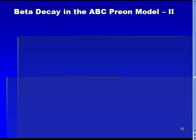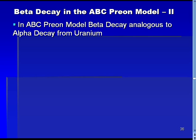There are some important points to make regarding the process of beta decay that we just saw. First, it is important to note that in the ABC preon model, beta decay is modeled to be analogous to alpha decay from a uranium nucleus.